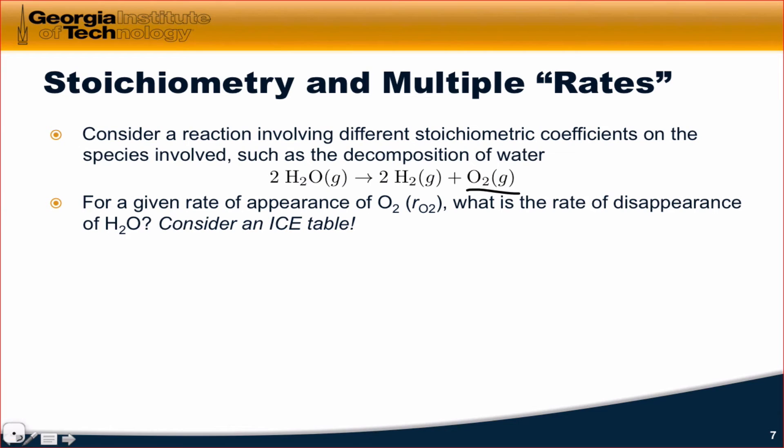For a given rate of appearance of O2, so for a given dO2/dt, the instantaneous rate of appearance of O2, what's the rate of disappearance of H2O? Well, think about how we would do this in an ICE table. On the change line, what would we write? Assuming the reaction is going to the right, we're gaining O2, but we're losing twice as many molecules of H2O as we're gaining molecules of O2. This is a consequence of the stoichiometry. This two matches the two in the balanced chemical equation, and this one matches the one in the balanced chemical equation as well.